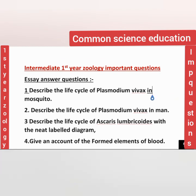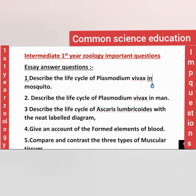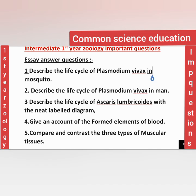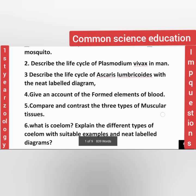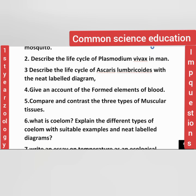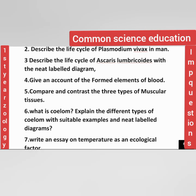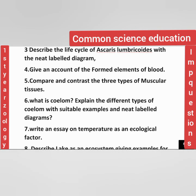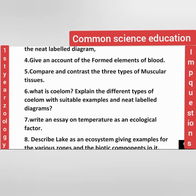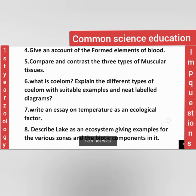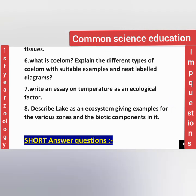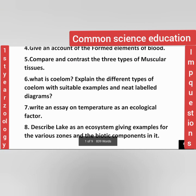For essay questions, from Biology in Human Welfare, three questions are selected: Plasmodium vivax in mosquito, and drug and alcohol abuse. From Structural Organization in Animals, three questions: formed elements of blood, compare and contrast three types of muscular tissues, and what is coelom - explain different types. From Ecology: temperature as an ecological factor, and describe lake as an ecosystem.